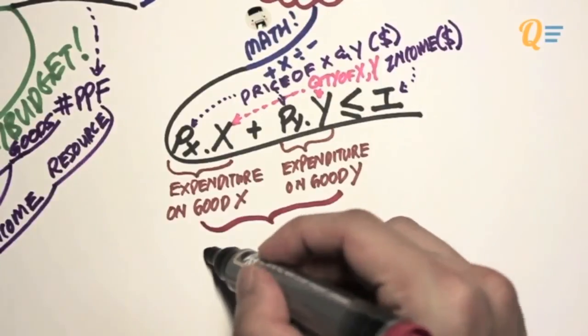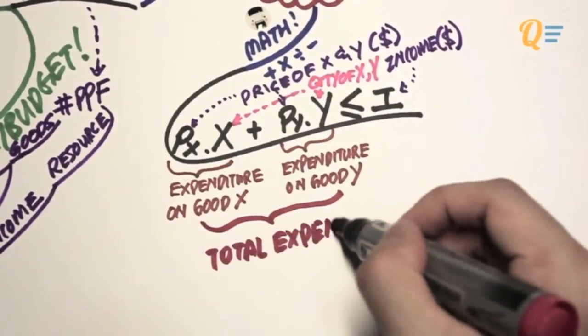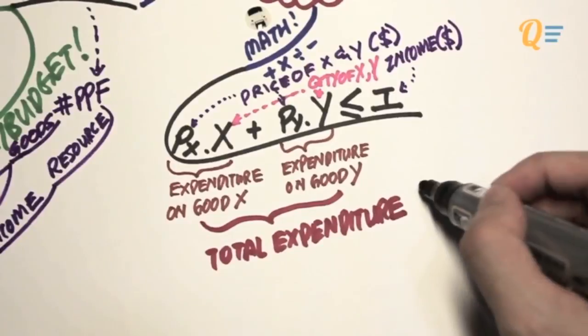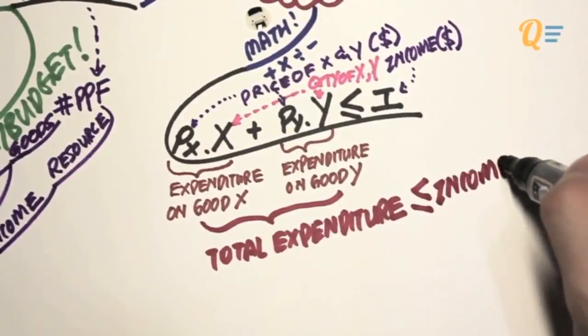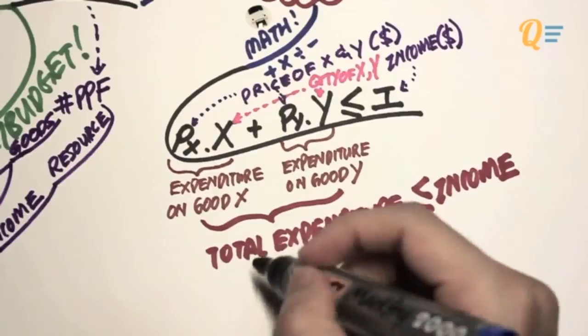If you add up expenditures on both good X and good Y, you get the total expenditure of this particular consumer. Obviously, this amount has to be less than the income this person makes.